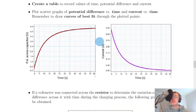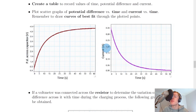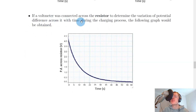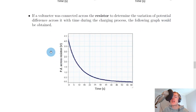For the charging capacitor case, the potential difference across the capacitor against time gives a curve going upward. For current against time — which is the same throughout since it's a series circuit — the graph shows a curve going down over time. If you connect the voltmeter across the resistor to measure the variation of potential difference across it during charging, the graph obtained shows a curve going down over time as well.